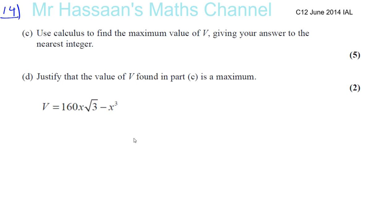You can do all the questions. Now, it says use calculus to find the maximum value of V, giving your answer to the nearest integer, and justify that the value of V found in part C is a maximum. So the maximum and minimum is found by using the gradient function, which is what you do when you differentiate. Okay, so I've got to differentiate the volume with respect to X. So I'm going to find what dV dx is.